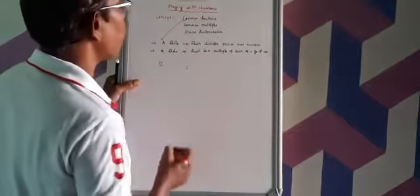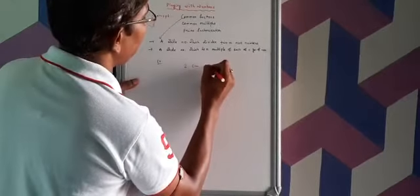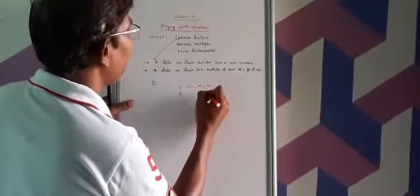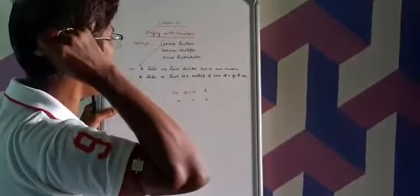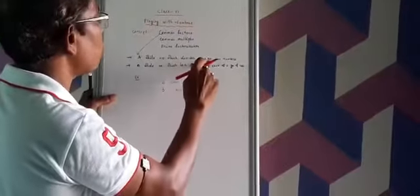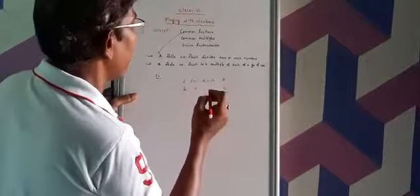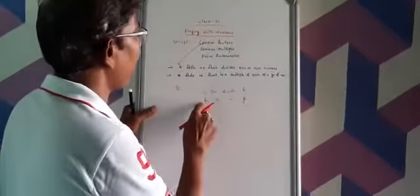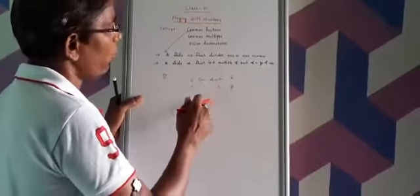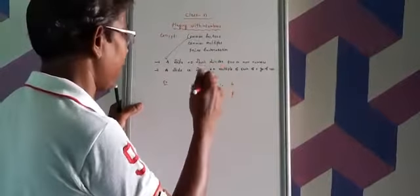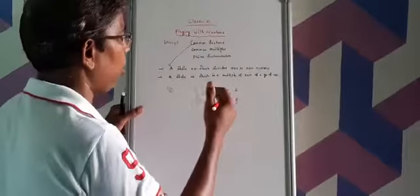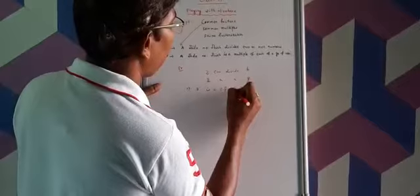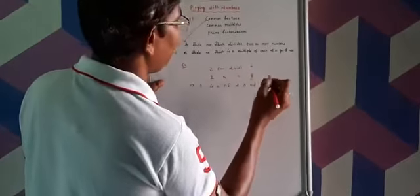For example, suppose 2. The number 2 can divide 6. Similarly, 3 can divide 6. Also, 2 can divide 8. Now, we conclude that 2 is such a whole number which can divide 6 as well as 8. So, we can say that 2 is a common factor of 6 and 8.